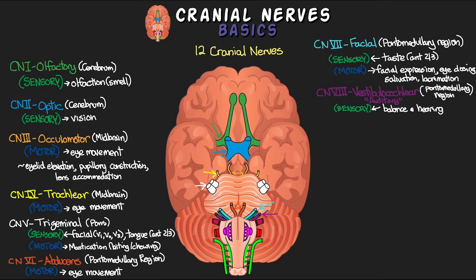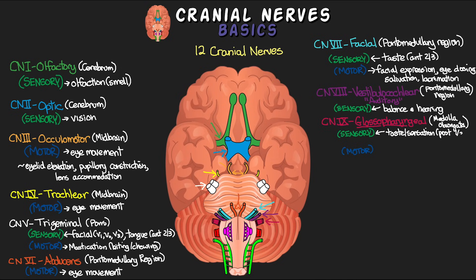Cranial nerve nine is the glossopharyngeal, originating from the medulla oblongata. The name gives clues about the areas it impacts: 'glosso' means tongue and 'pharynge' comes from pharynx, meaning throat. This nerve is both sensory and motor. The sensory portion deals with taste and sensation on the posterior one-third of the tongue, sensation of the pharynx, and input from the sinus and carotid chemo- and baroreceptors — partially shared with cranial nerve ten. The motor function involves muscles for swallowing and aids in salivation.